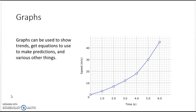Our second type of data, graphs, is often used in science. They can be used to show trends, get equations, make predictions, and various other things. In fact, most of our labs will be using graphs to make equations and then use those equations to predict where something will happen. One example is when we use the launchers to launch things across the room — you'll be graphing your data to find out where the launcher is hitting, then changing the angle and using your equation to find out where it's going to land again.